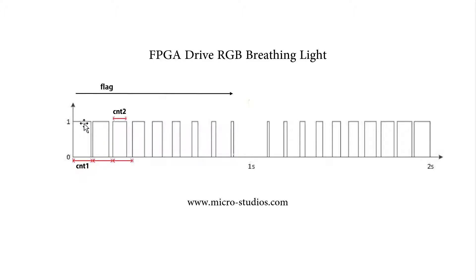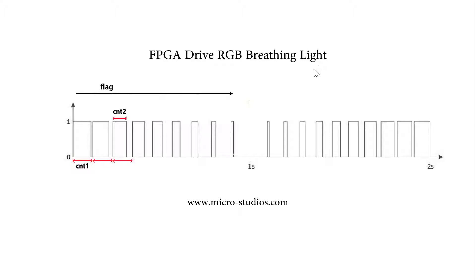We use the high level to turn on the light. When the width of the high level decreases, the brightness of the light also decreases. When the width of the high level increases, the brightness of the light will increase. So we need another value to represent whether it is decreasing or increasing.